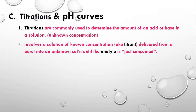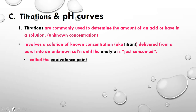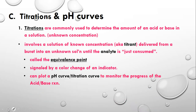You're trying to determine the analyte's concentration, and you run your titration until it is just consumed — that's when a color change occurs. There will also be an indicator present that is sensitive to pH when you do an acid-base titration. When the color change occurs, that's what we call the equivalence point, and it's always signaled by a color change of the indicator. That's the point where you stop your titration.